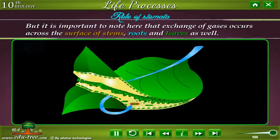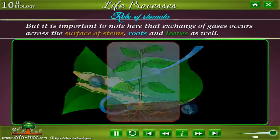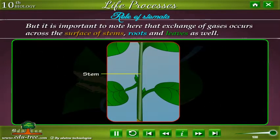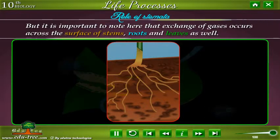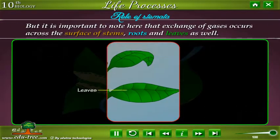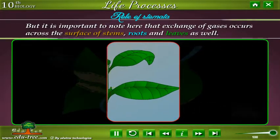But it is important to note here that exchange of gases occurs across the surface of stems, roots, and leaves as well.